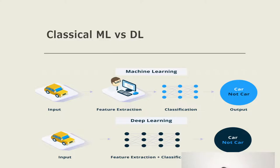We then feed those handcrafted features into a machine learning model. Those machine learning models can be Support Vector Machines, K-Nearest Neighbors, MLP, or there are many other classifiers and regressors used for classification and regression.